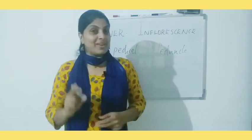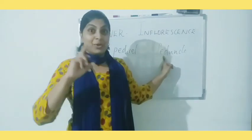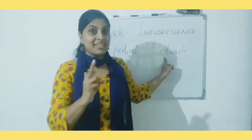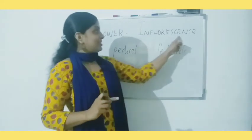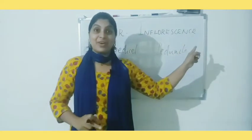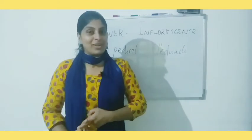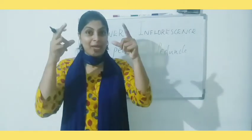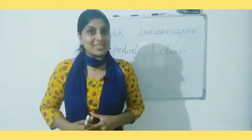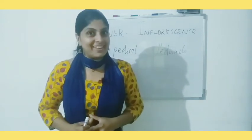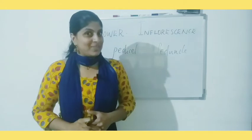So pedicel is the stock of a single flower and peduncle is the stock of the group of flowers. That type of formation is known as inflorescence. Inflorescence means the formation of florets or small flowers on a common stock or axis. There are three different types of inflorescence.